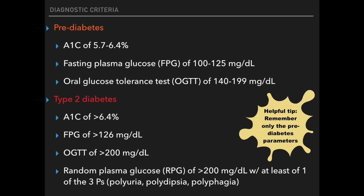For the oral glucose tolerance test for pre-diabetes, the results would be 140 to 199. Above that 199 reading would be indicative of type 2 diabetes. A random blood glucose greater than 200 with any symptoms of diabetes — any of those three Ps: polyuria, polydipsia, polyphagia — also indicates type 2 diabetes. Helpful tip: just remember those pre-diabetic numbers for reference, and then everything higher than that is going to be your type 2 diabetics.